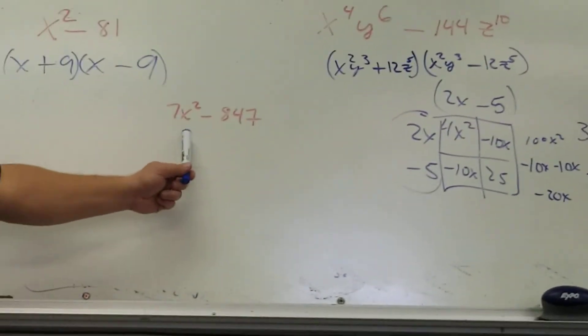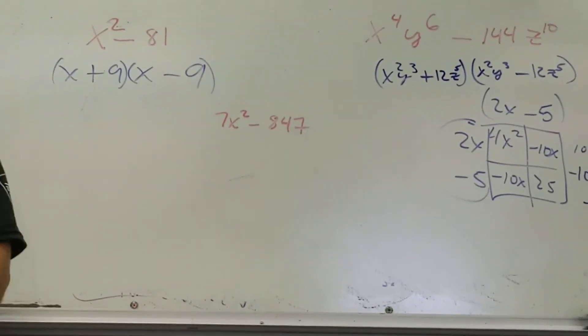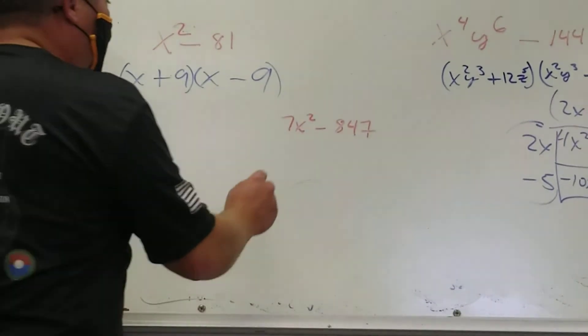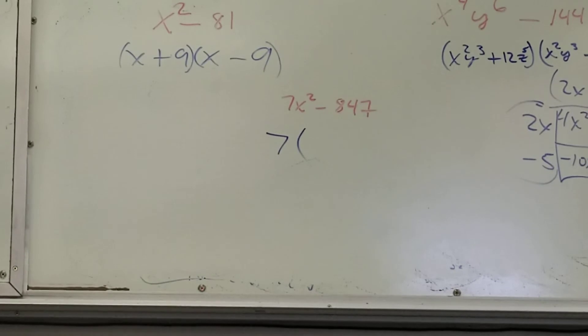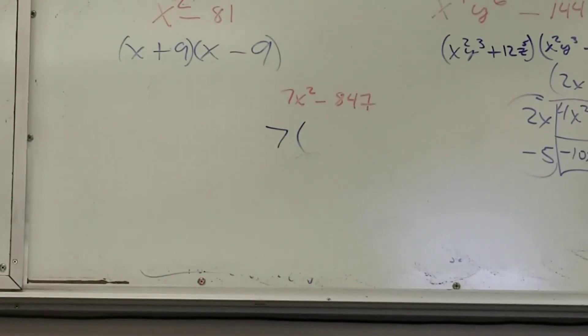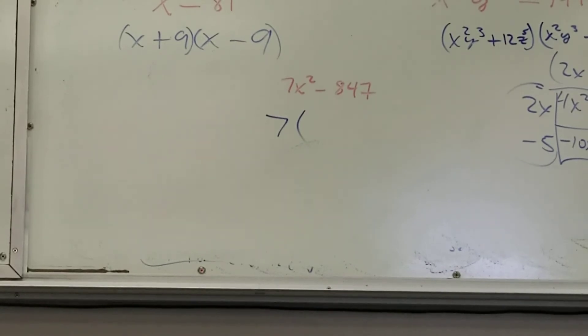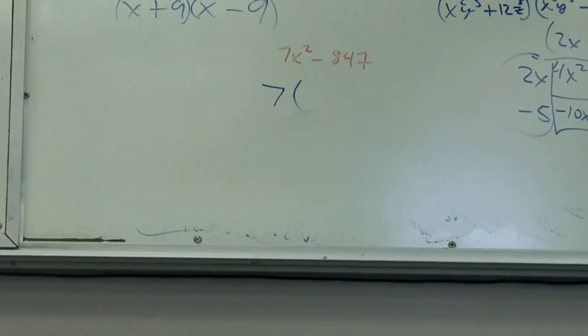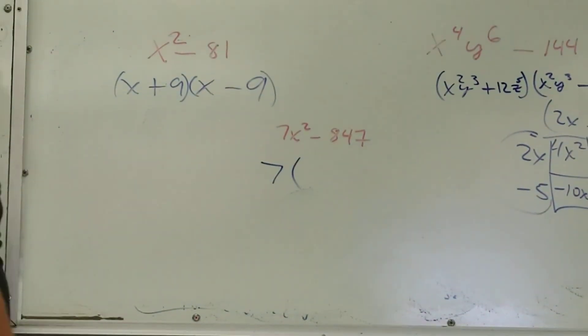This one doesn't look like it fits, but it could. If I can factor out a what? A 7. I'm going to assume that I can factor out a 7. If I can't, I'm not out nothing, right? All I am is like, oh, well, I can't factor out a 7. There's no way to factor that. I'm just going to factor it, right? But let's try and pull out a 7. What will that give you?